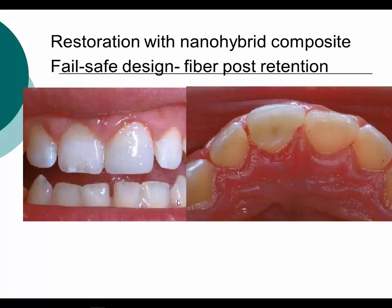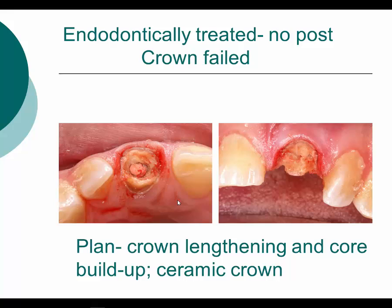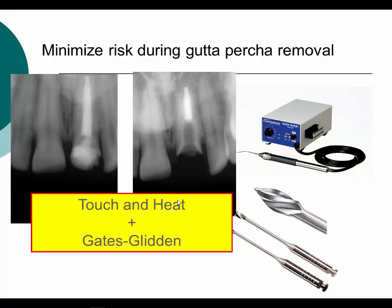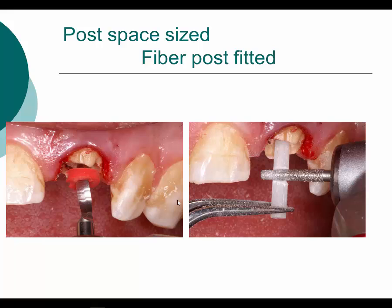In another circumstance, a patient had an endodontically treated tooth with no post and the crown failed — this is what we're faced with. The plan is to do crown lengthening to develop the ferrule effect, do a core buildup with a fiber post to retain the core, and place a ceramic crown. When developing the composite core, it must have an anti-rotational design. We remove the gutta-percha using a Touch 'n Heat and Gates Glidden — you can see this canal was rather large to start with. We choose a post that meets the size of that canal without enlarging it or removing additional dentin.